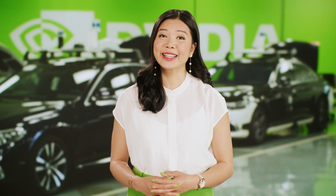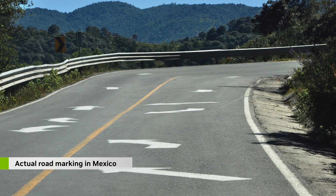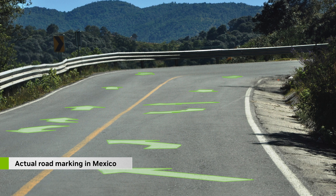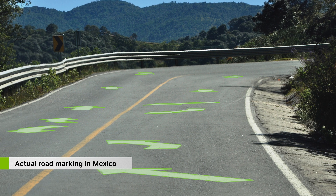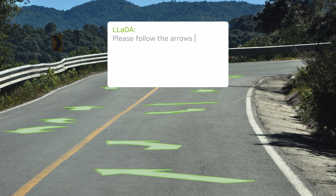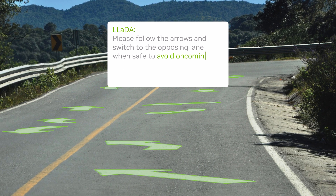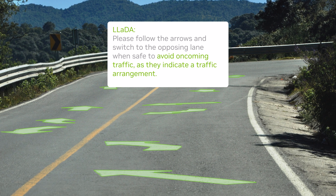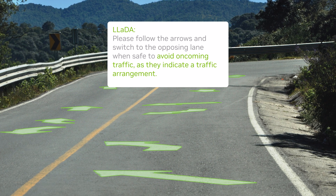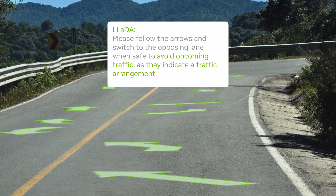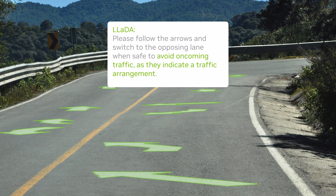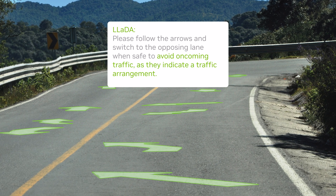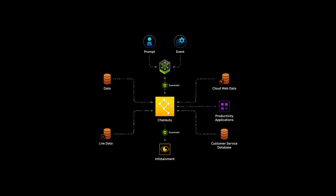Say you travel to Mexico and find yourself on a curvy mountain road with some confusing arrows suddenly appearing. Activating LADA, you can see that these arrows indicate a special local traffic law that lets you use the opposing lane to navigate the upcoming blind corner.